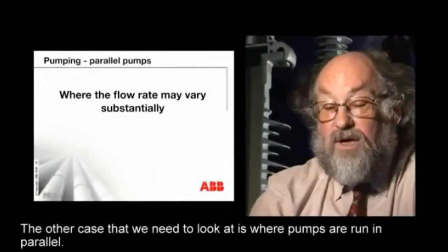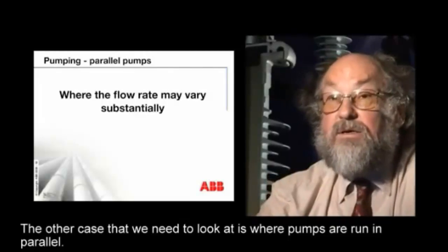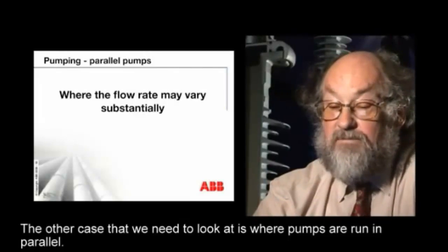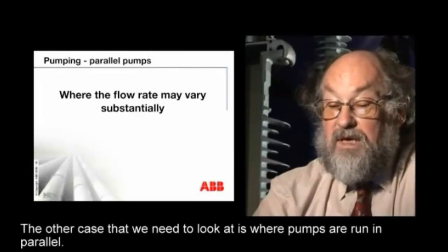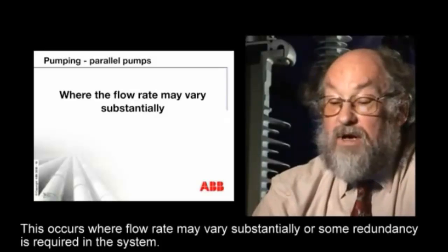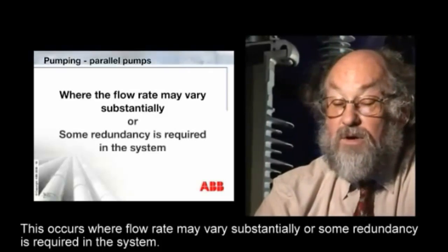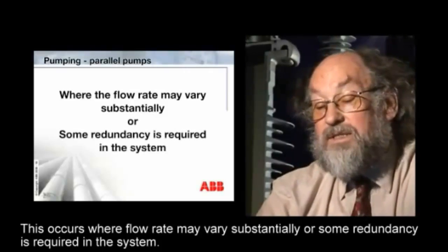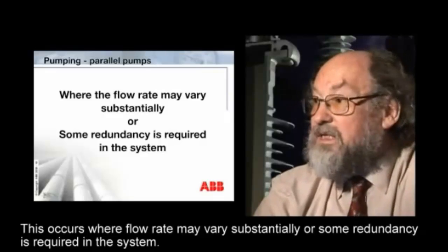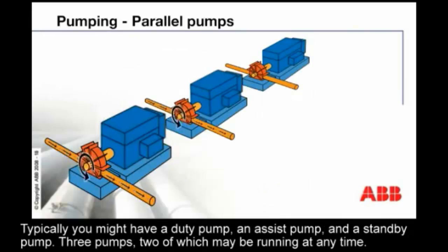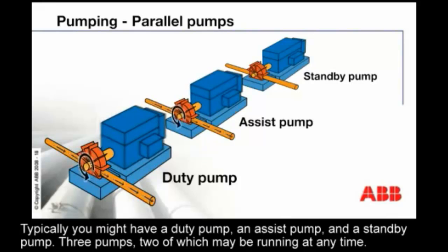The other case that we need to look at is where pumps are running parallel. This occurs where flow rate may vary substantially or some redundancy is required in the system. Typically you might have a duty pump, an assist pump, and a standby pump — three pumps, two of which may be running at any time.